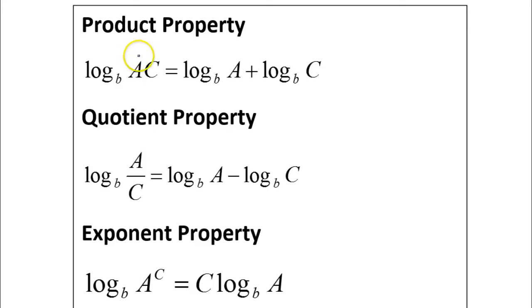When you're going from a single log to a sum, when you're moving in this direction, it's called expanding. On the other hand, if you're starting with a sum or a difference or a number out front, and you're moving in this direction back to a single log, then this is called condensing.